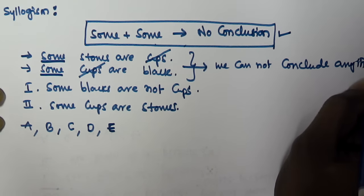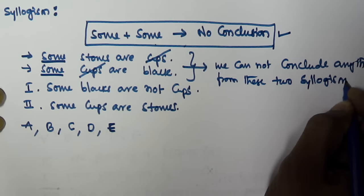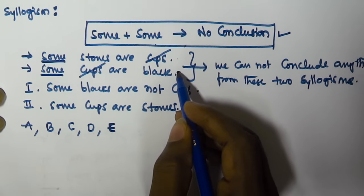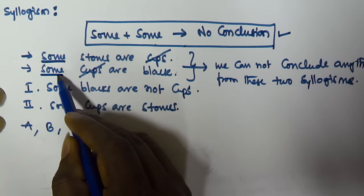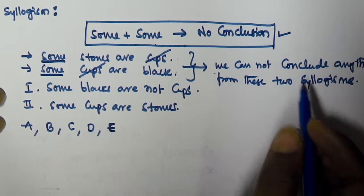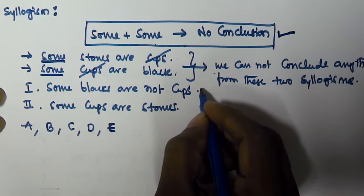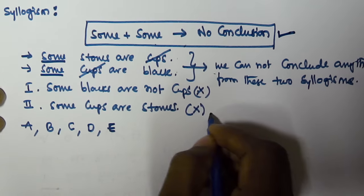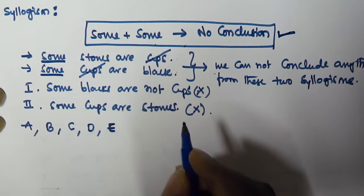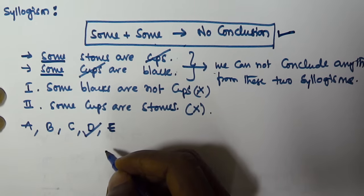We cannot conclude anything from these two syllogisms. So both given conclusions are going to be false. Whenever you see 'some' and 'some,' and the predicate of the first one is equivalent to the subject of the second one, you can directly select option D, because both conclusions are always going to be false.